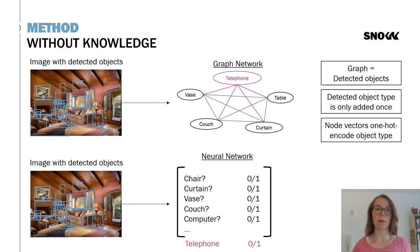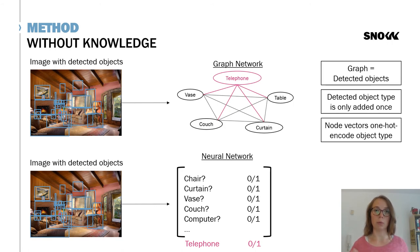Graph networks are more flexible than neural networks. In a graph network, if you have a new detected type of object — for example, a telephone — you can add a new node to the graph, connect it to other nodes, and use it in predictions. But in a neural network, there is no room in the fixed vector space to represent the telephone, so you cannot add the extra detected object or account for it in predictions. This makes graph networks more flexible as knowledge grows during operation.